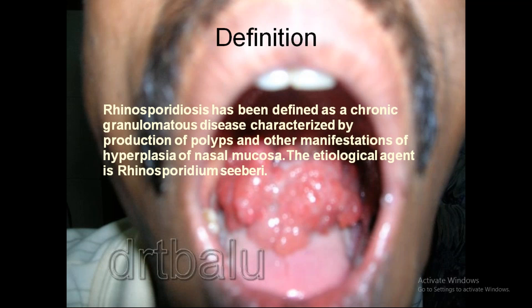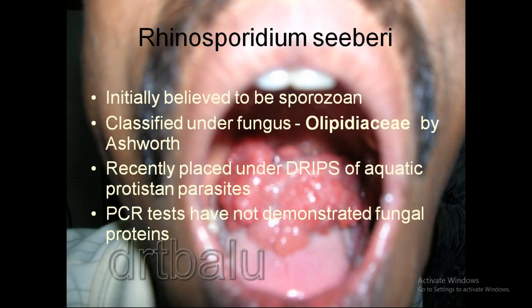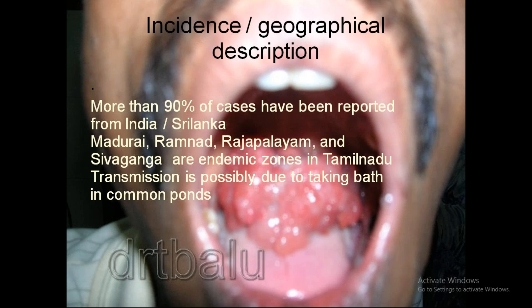Rhinosporidiosis is defined as a chronic granulomatous disease characterized by production of polyps and other manifestations of hyperplasia of nasal mucosa. The etiological agent is Rhinosporidium seeberi. It was initially believed to be a protozoan classified under fungus, and recently placed under the clade of aquatic protists and parasites. PCR tests have not demonstrated fungal proteins.